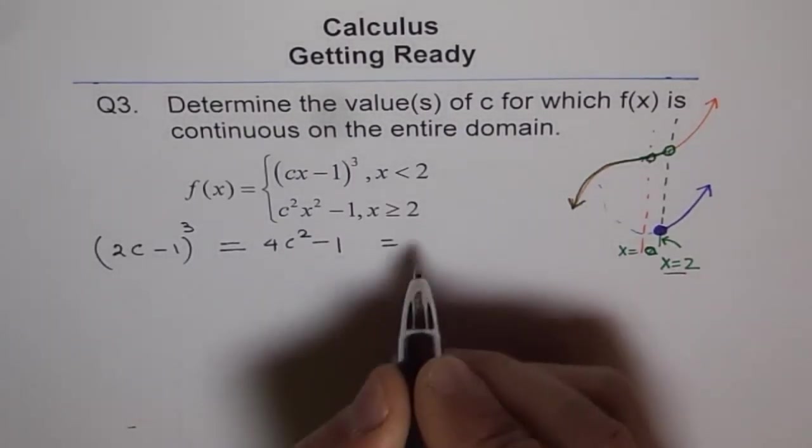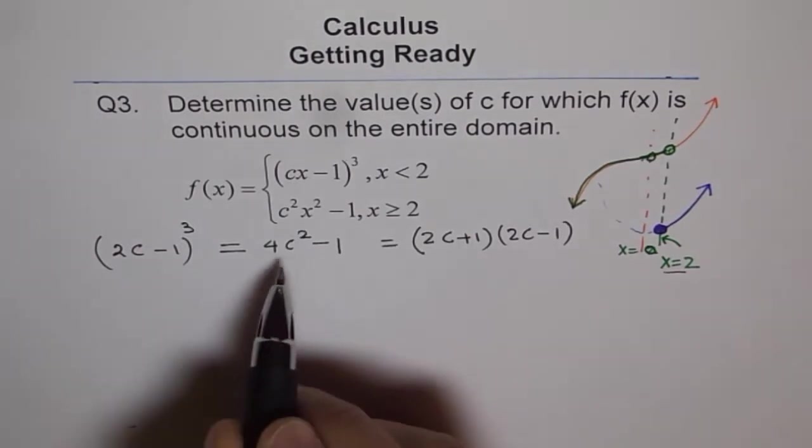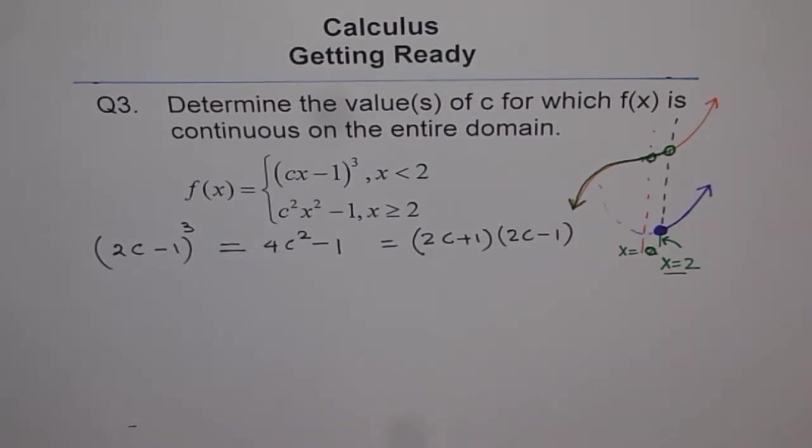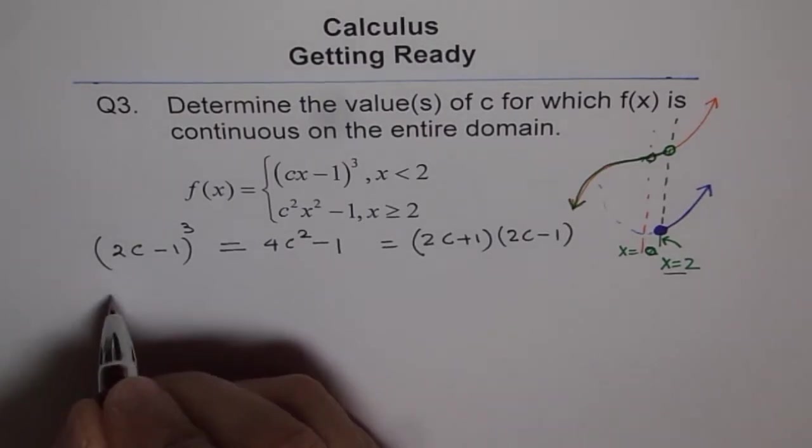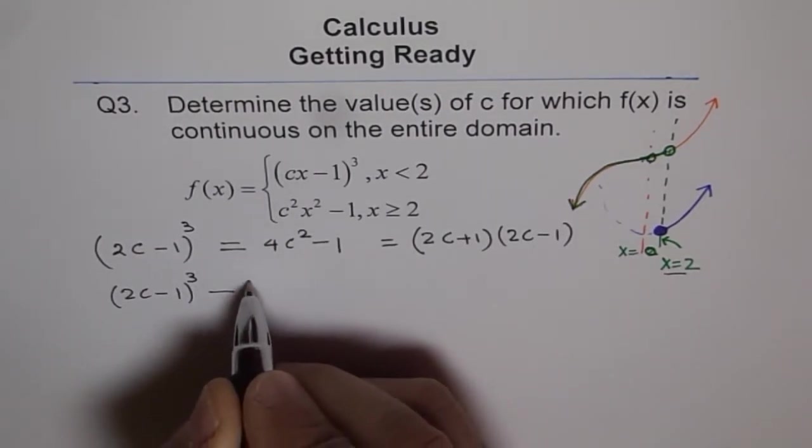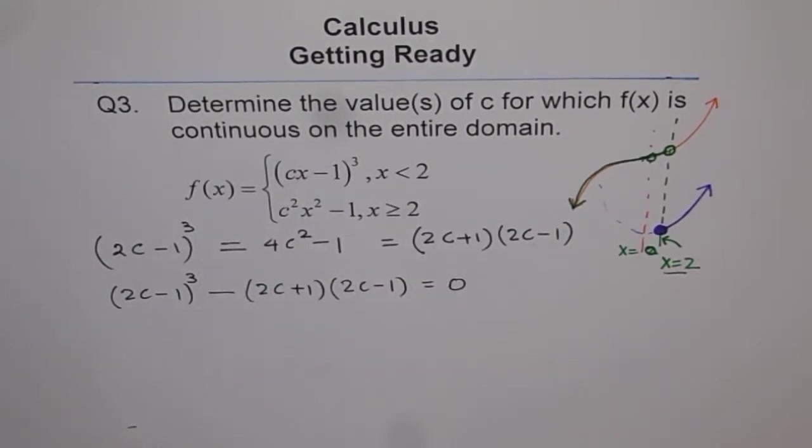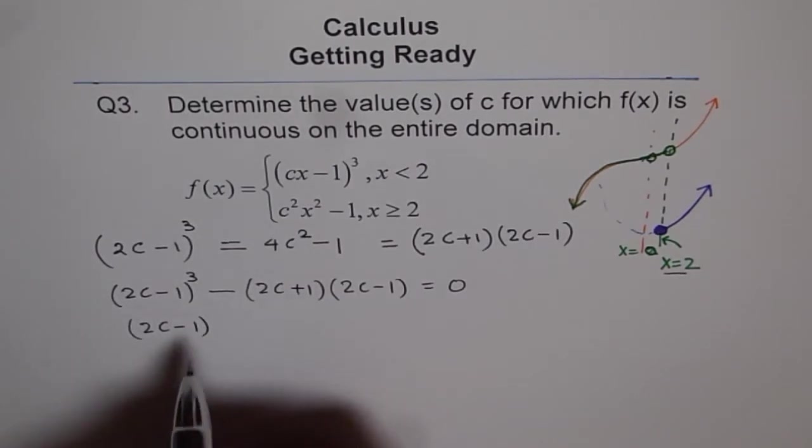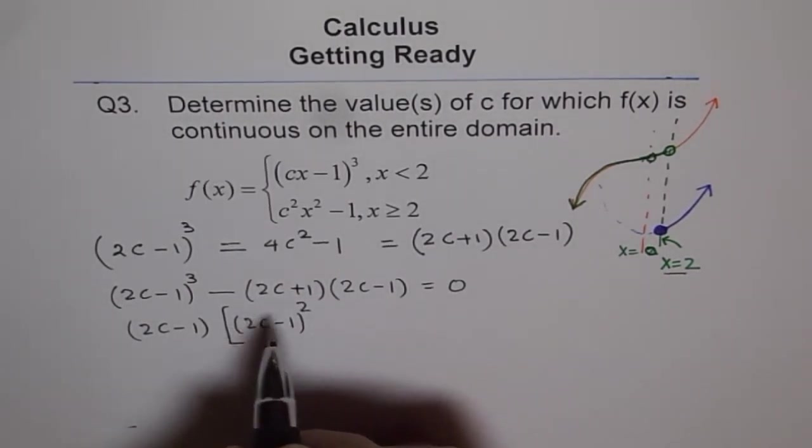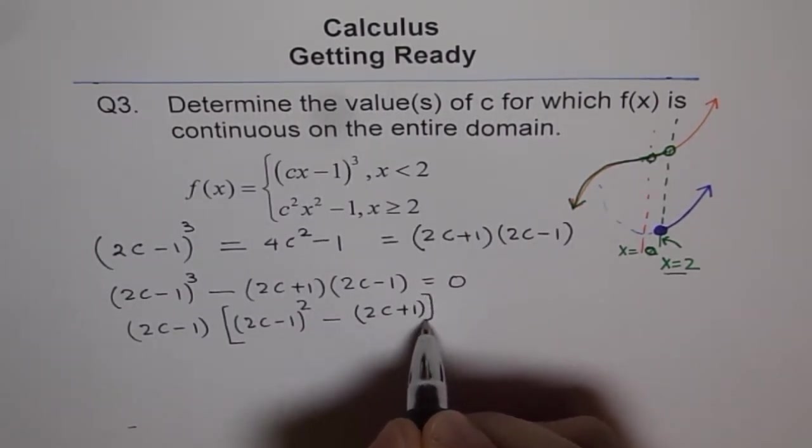So I could write this as (2c + 1)(2c - 1). So I am writing 4c² - 1 as this: (2c + 1)(2c - 1). And you can see 2c - 1 is a common factor. So I am bringing them together and then solve. The next step is (2c - 1)³ minus (2c + 1)(2c - 1) equals 0.